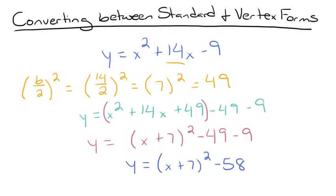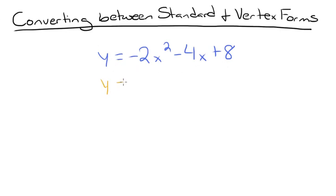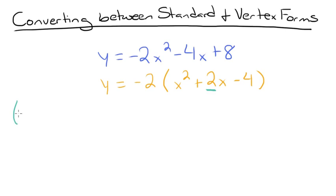Let's try another problem converting a standard form equation to vertex form: y equals negative 2x squared minus 4x plus 8. Remember, in order to complete the square, the value of a must be 1, so we have to factor a negative 2 out of the right side of the equation. We'll have y equals negative 2 times x squared plus 2x minus 4. Now identify the b value — our b value is 2. We take half of b and square it: 2 over 2 squared equals 1 squared, which equals 1.